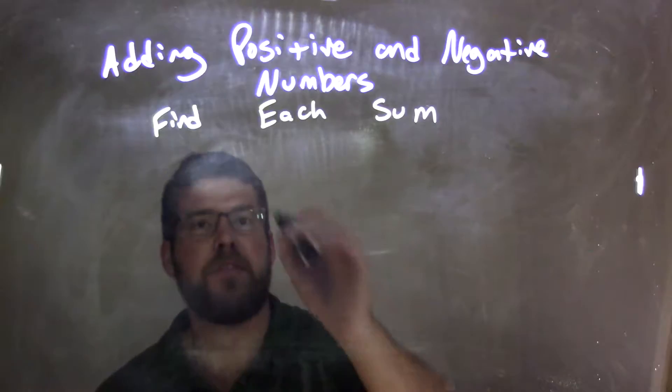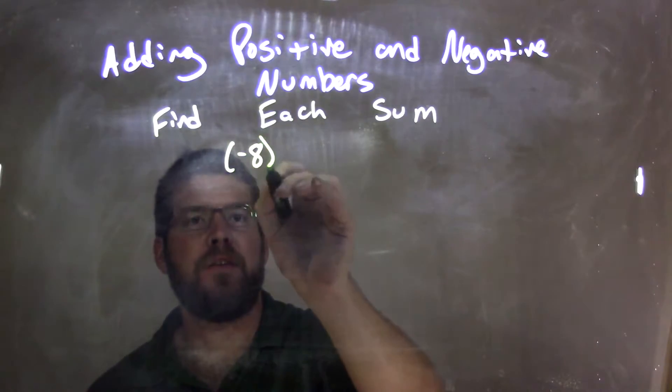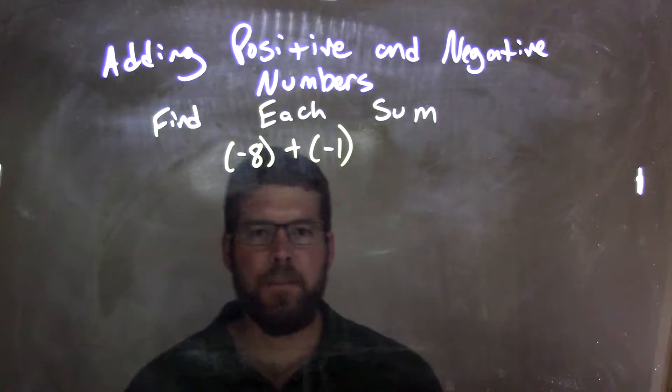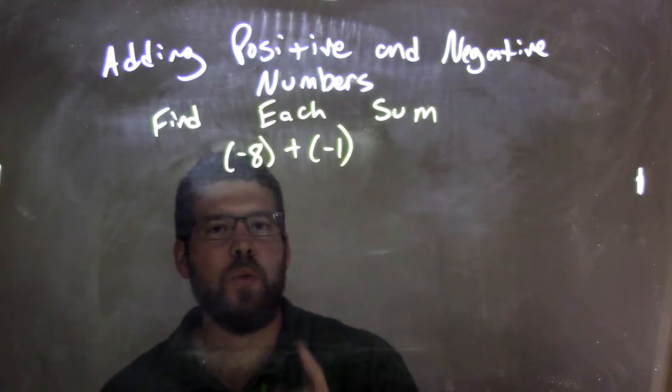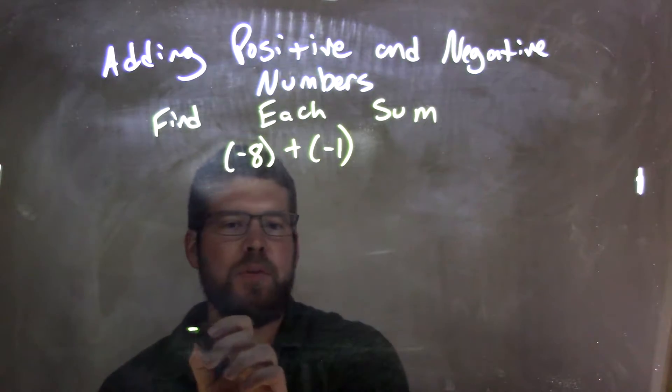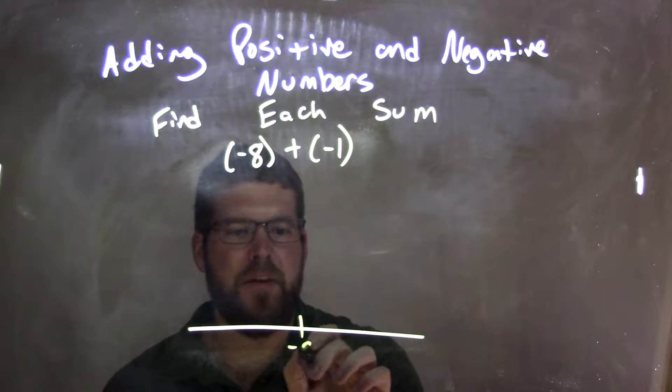If I was given this expression, negative 8 plus negative 1, I would start with negative 8. It helps if we draw a number line here, so negative 8 right here.